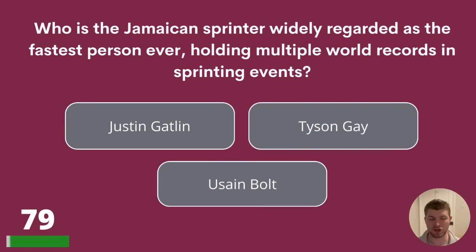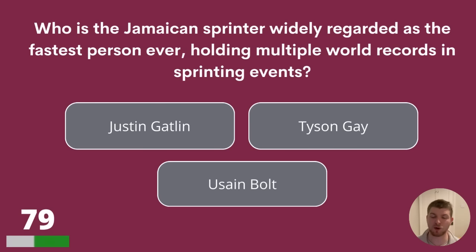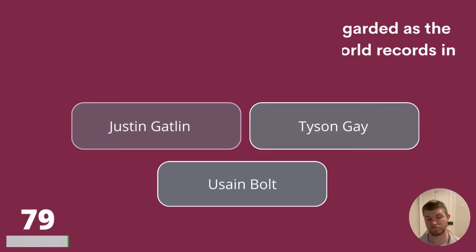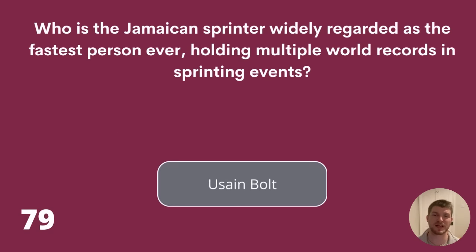Question 79. Who is the Jamaican sprinter widely regarded as the fastest person ever, holding multiple world records in sprinting events? Justin Gatlin, Tyson Gay, or Usain Bolt? The answer is Usain Bolt.